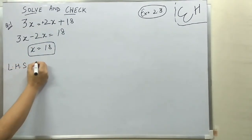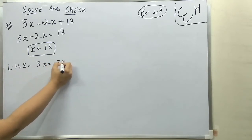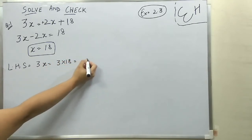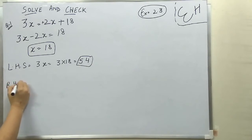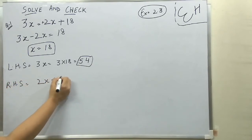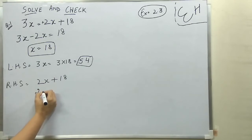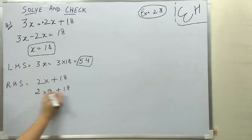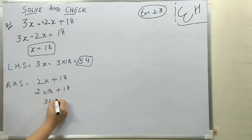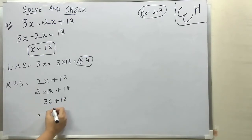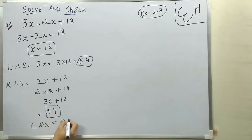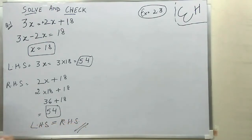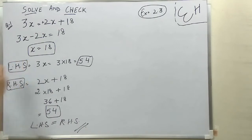Now you have to check your answer. LHS is 3x, that is 3 into 18, which comes out to 54. LHS is 54. RHS is 2x plus 18. x is 18, so 2 into 18 is 36, plus 18 is 54. LHS and RHS both are 54, so LHS is equal to RHS. Hence verified. In checking, both sides have to become the same.